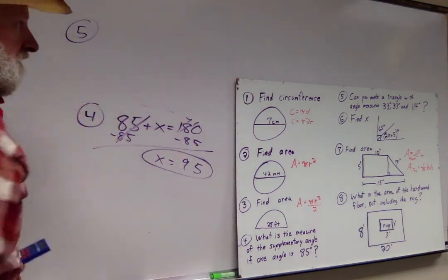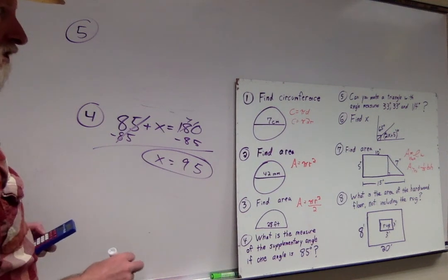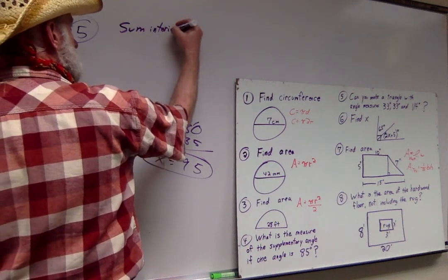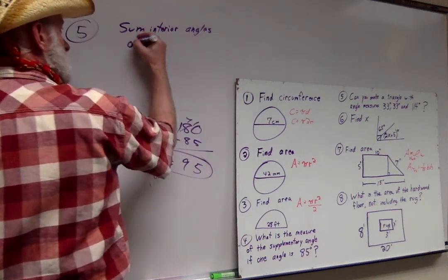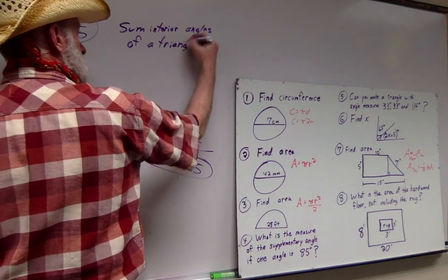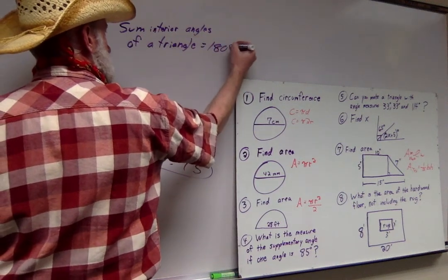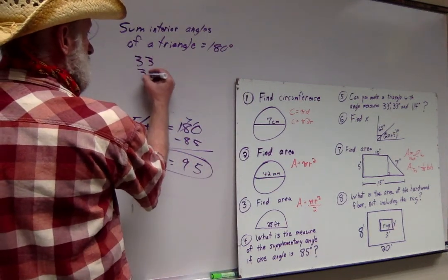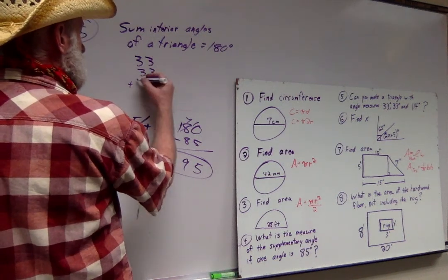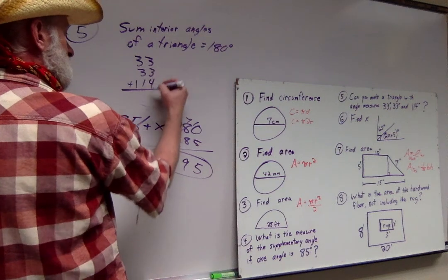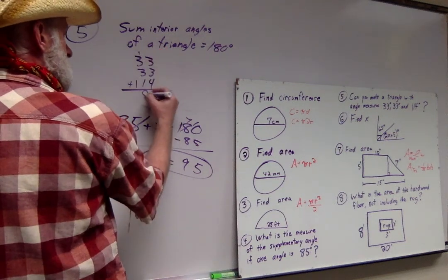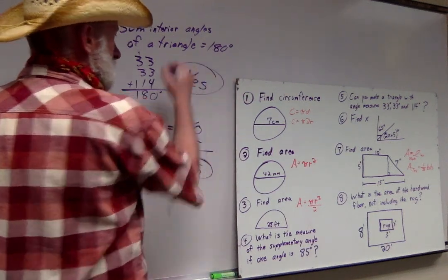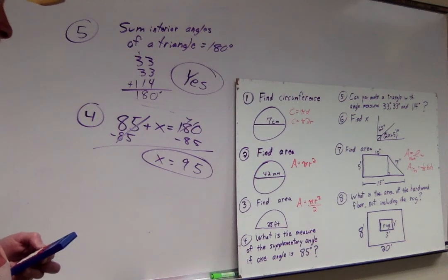Number five. Can you make a triangle with angle measures 33, 33, and 114? The sum of the interior angles of a triangle have to be 180 degrees. If I got a 33, and a 33, and a 114, line that up. By golly, that is 180 degrees. Yes, you can make that into a triangle.